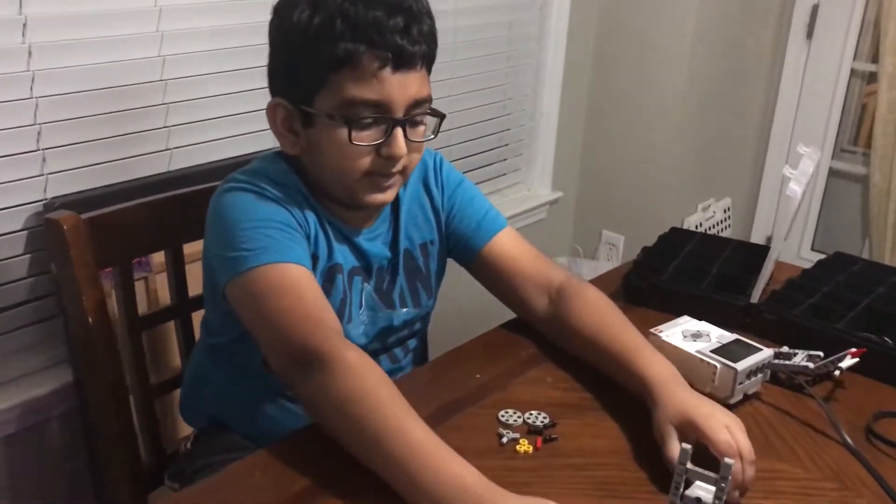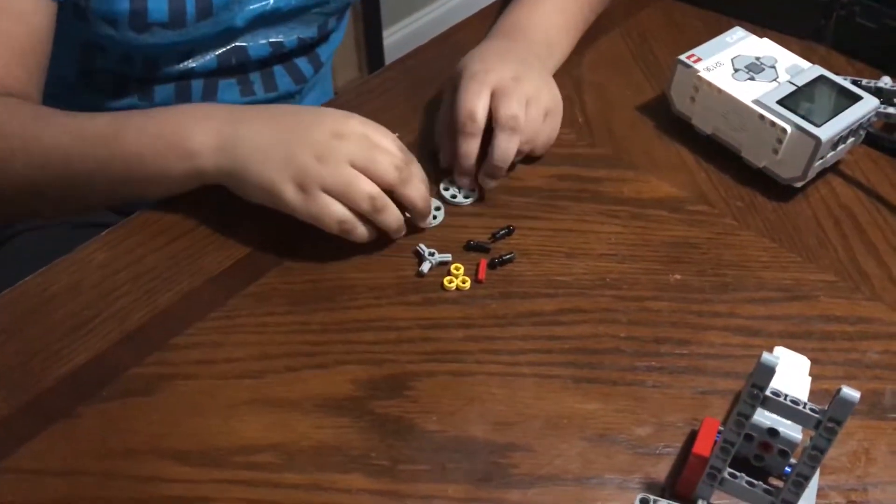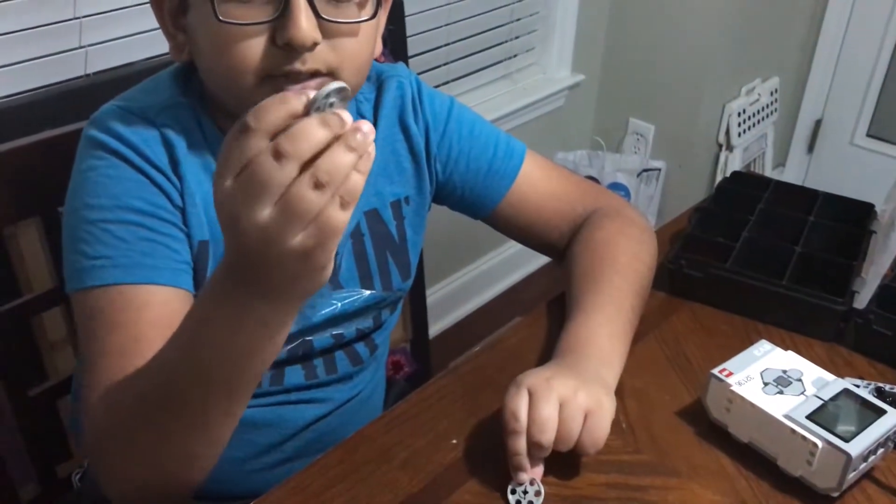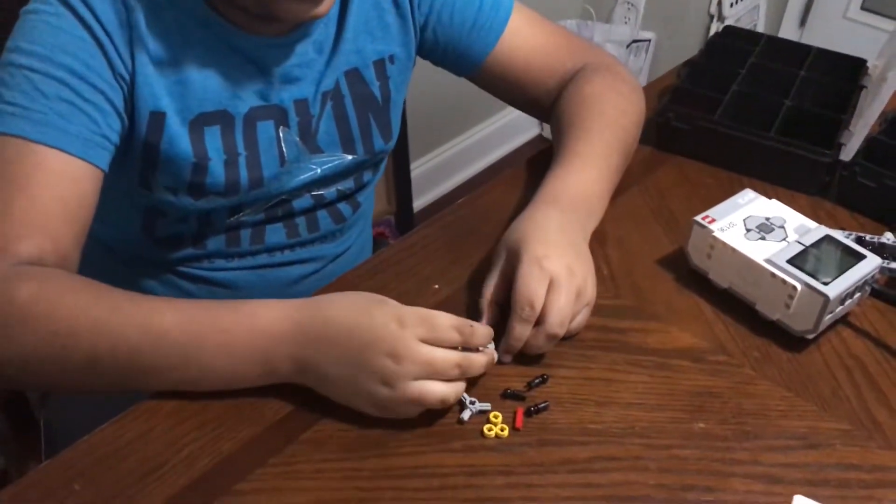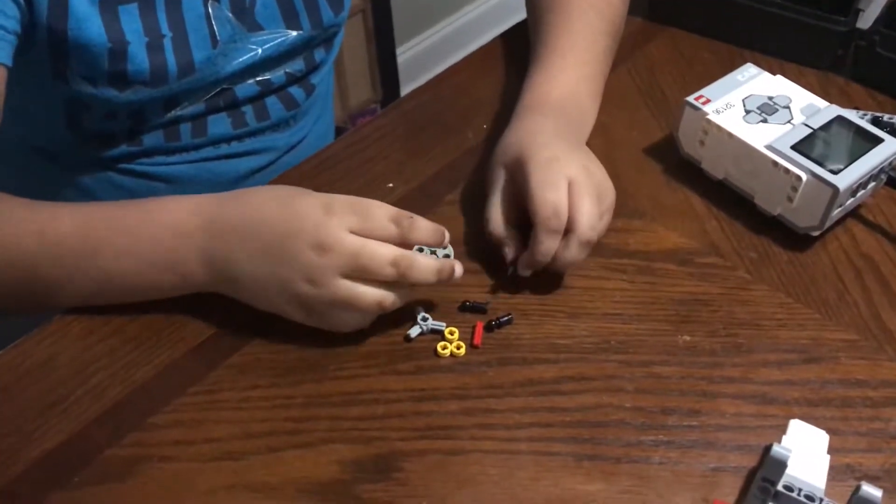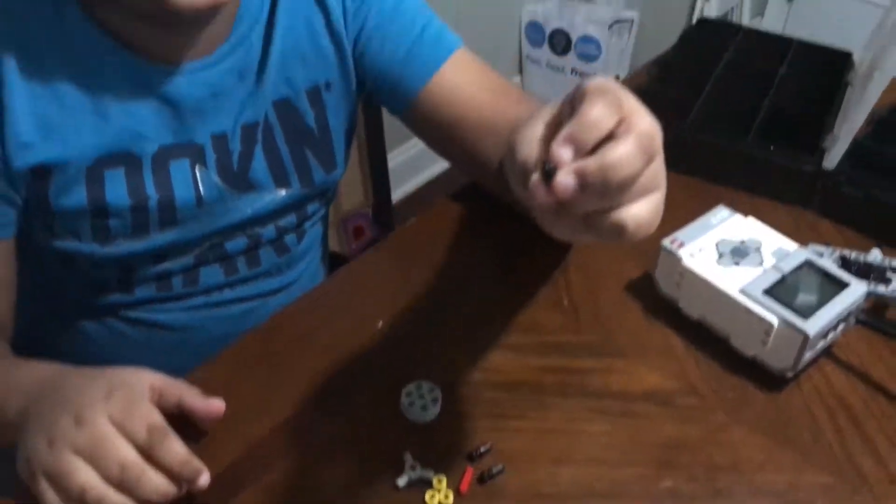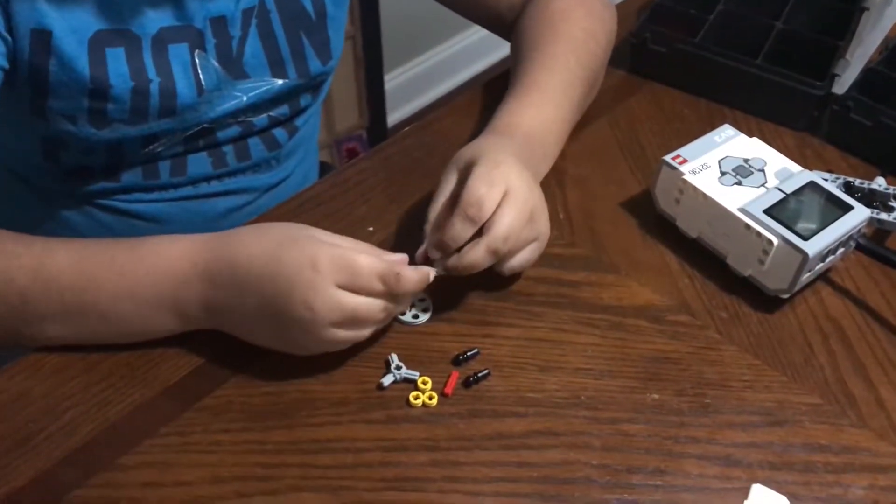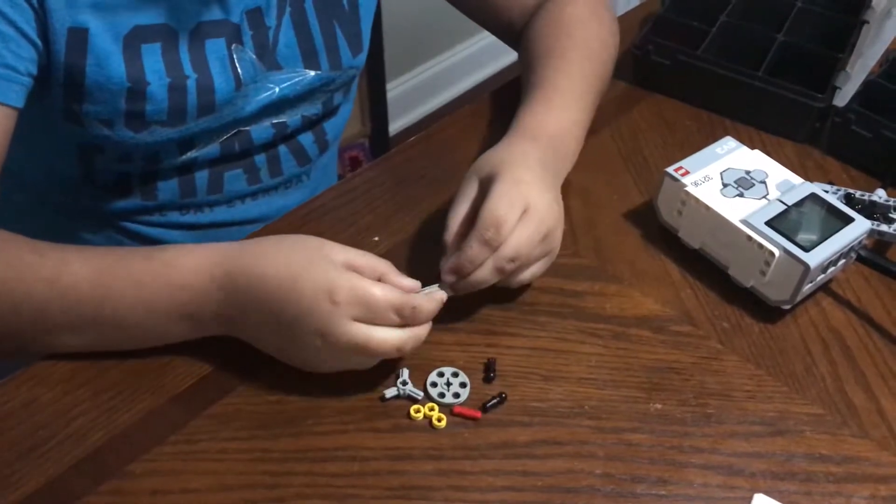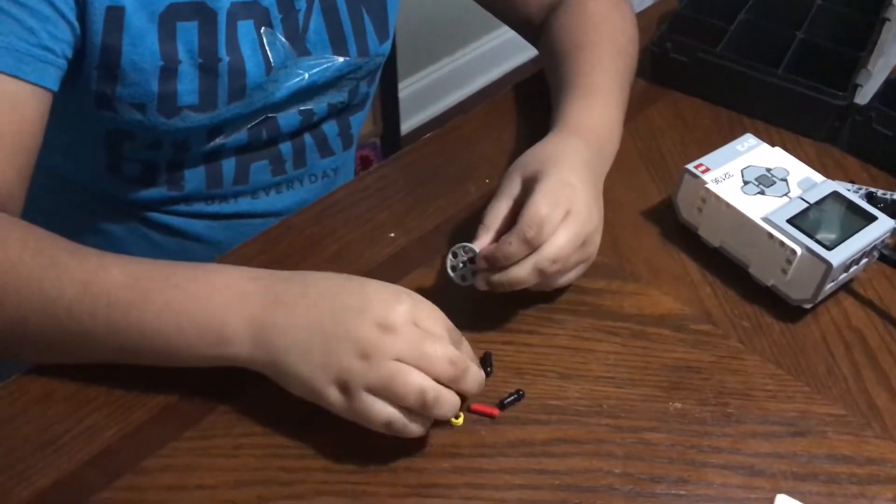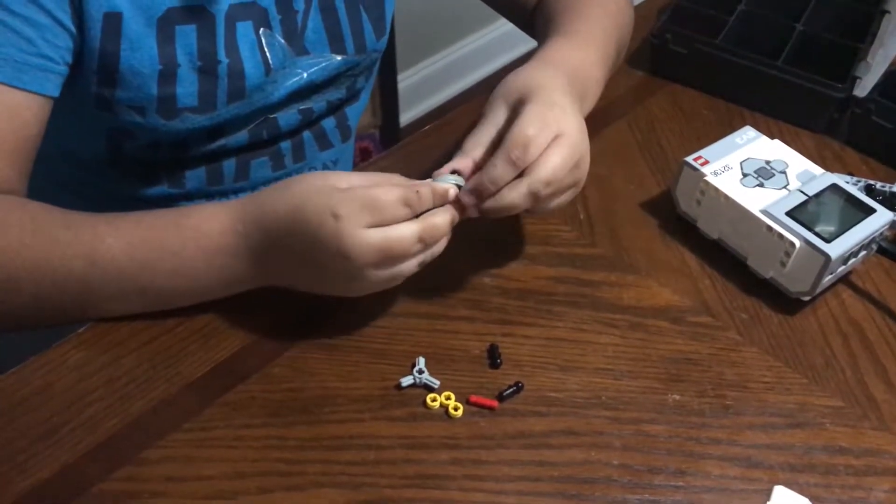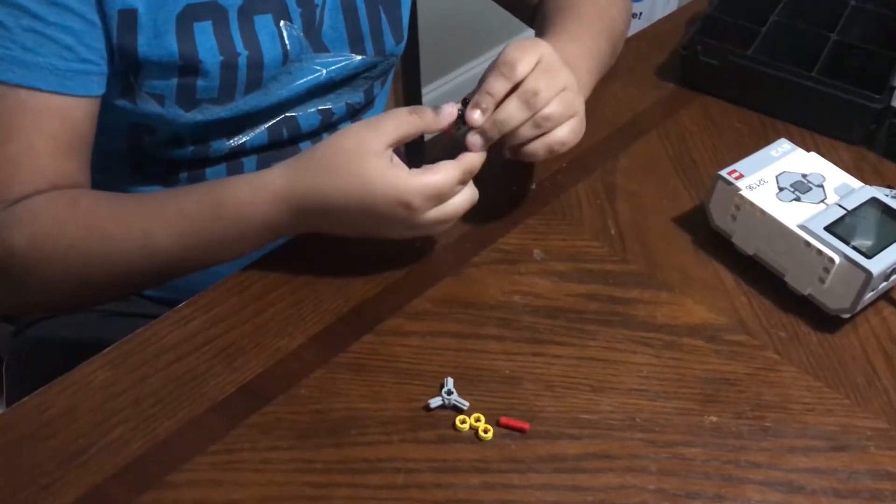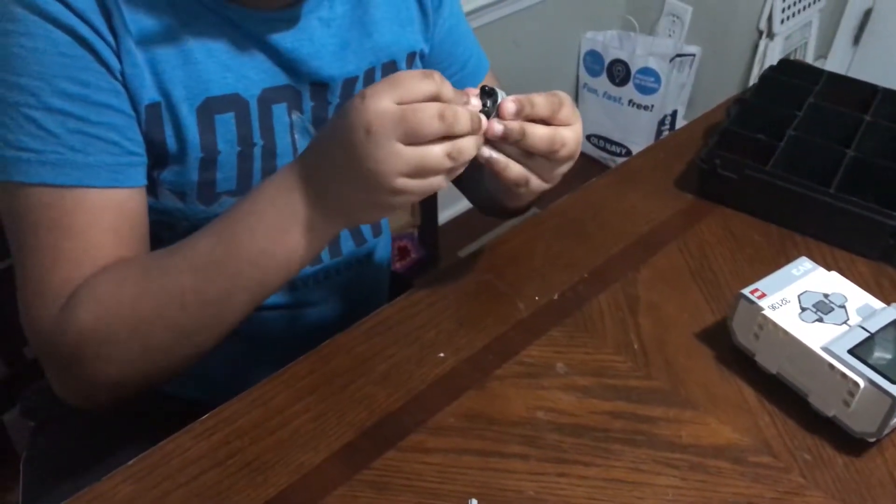So here's how to build it. First we need to start off with two of these little wheel thingies. You got two of those, put them onto each other. You have three of these pins with the ball things on. Make sure you put that on, yeah, like that.